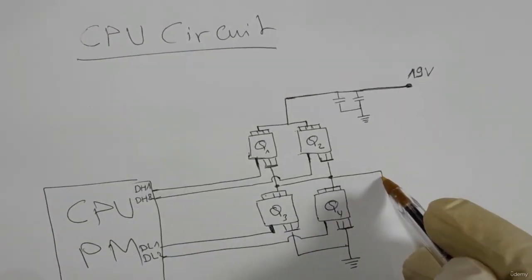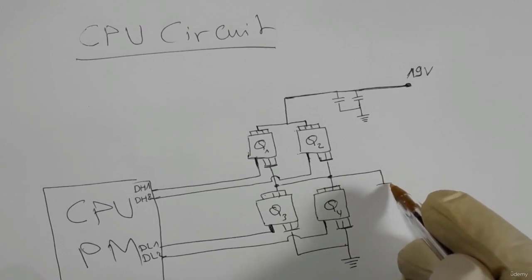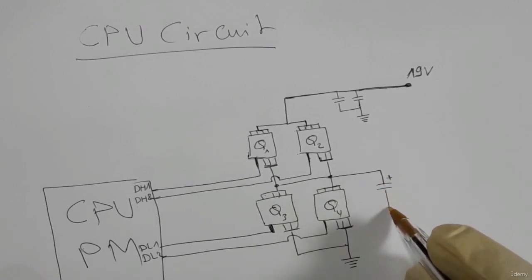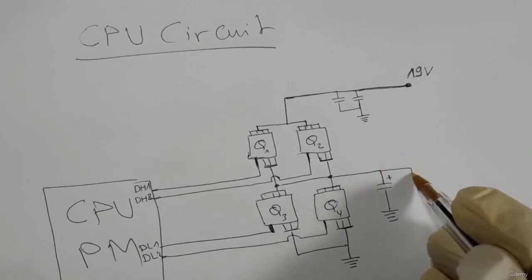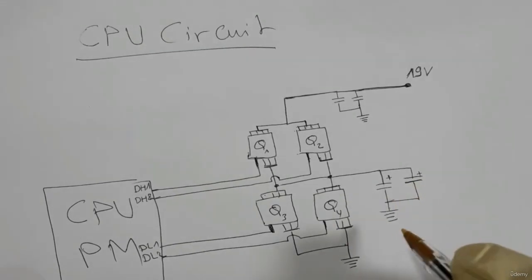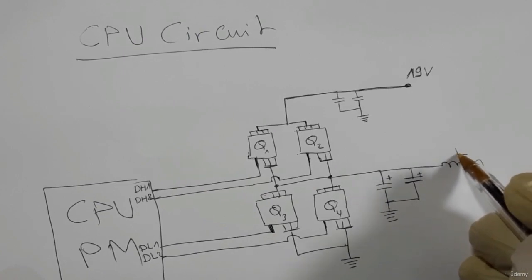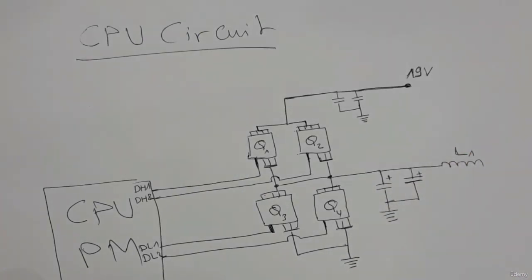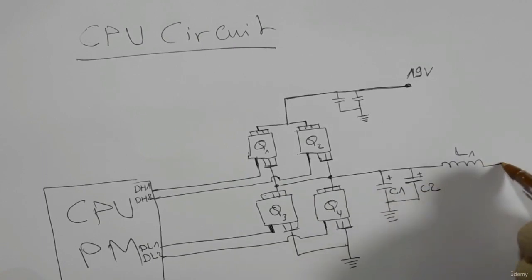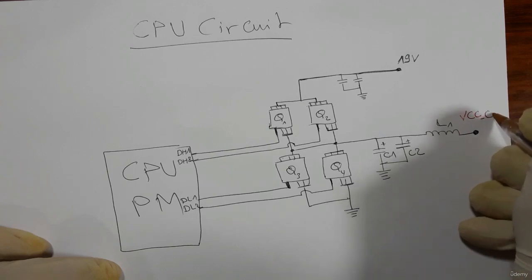Here we have two capacitors - these are chemical capacitors, or polarized capacitors. We have another polarized capacitor exactly as on the motherboard, and here we have the coil L1. For example, this is C1 and C2, and from here we will get the VCC core.